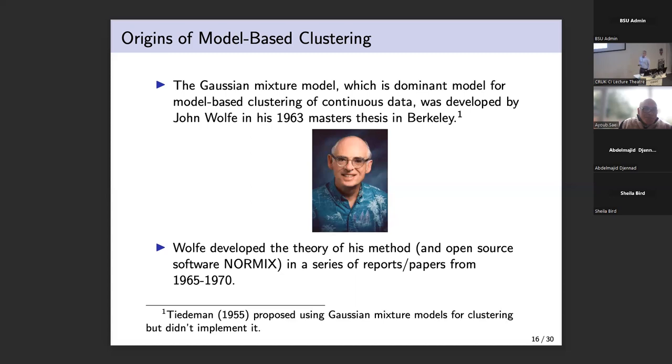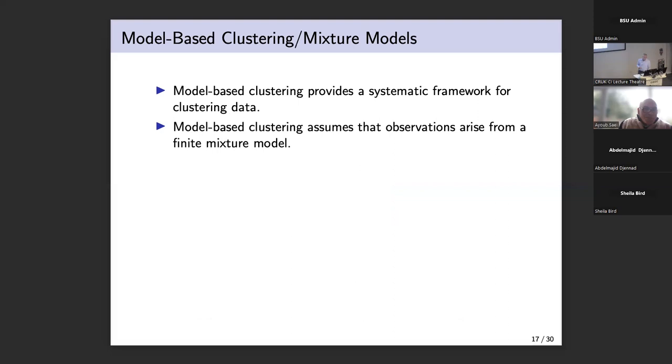So how does model based clustering actually work? It's going to give us a systematic framework for clustering data. We're going to assume that the observations come from what's called a finite mixture model. I'm going to assume that there are capital G groups, clusters, classes or components, whatever you want to call them. It seems to vary depending on the domain you're working in. So that's the number of clusters. The probability that an observation comes from group little g is given by the value tau g. So that's a probability between zero and one. And obviously the probability across all the groups adds to one.